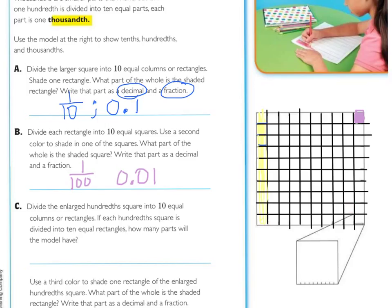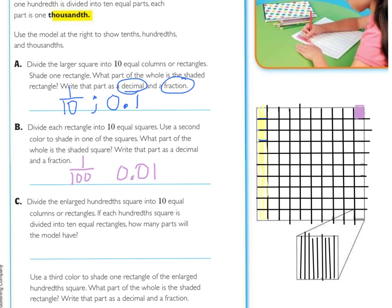So, if each of these little squares were divided into ten, how many parts would it have? So, if you think about it, there is ten here, and a hundred little squares, so ten times one hundred equals one thousand parts.